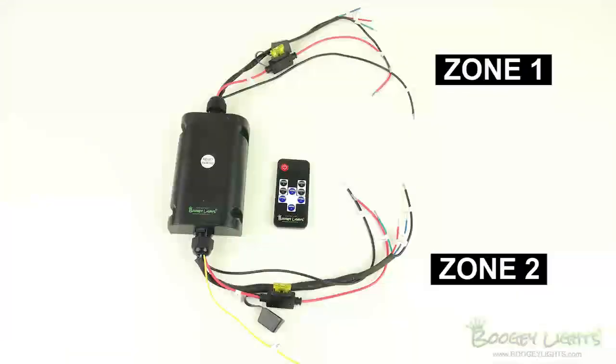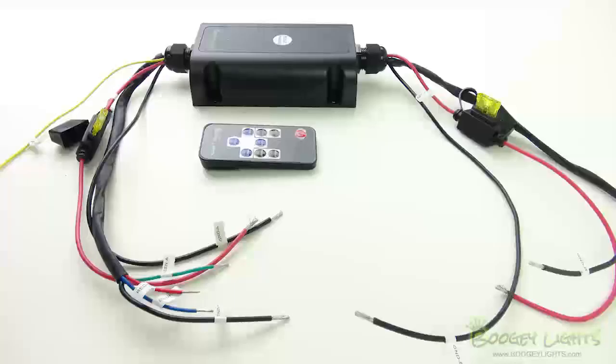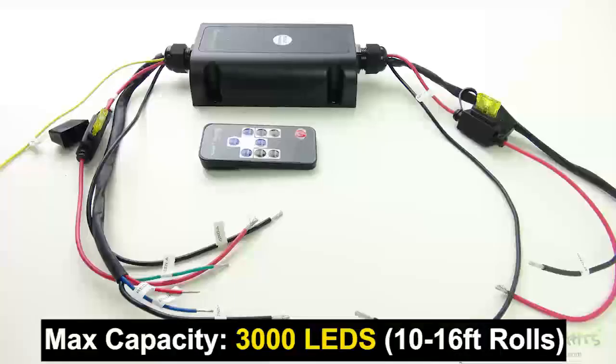This controller allows the user to set up and operate two distinct RGB multi-color lighting zones which can be operated and controlled individually by this single controller. This controller is rated for a maximum capacity of 3,000 50-50 common cathode LEDs. That's 1,500 LEDs per zone.